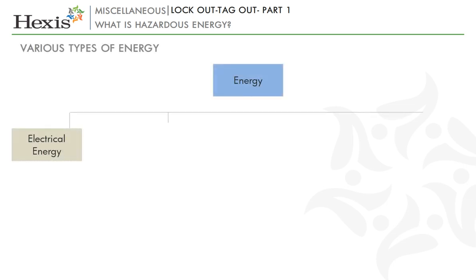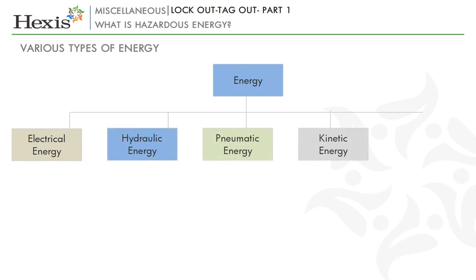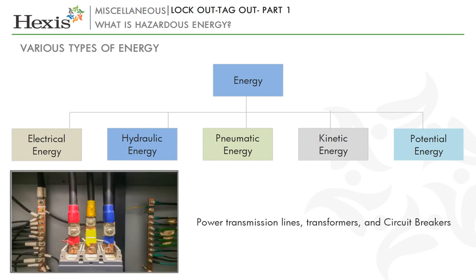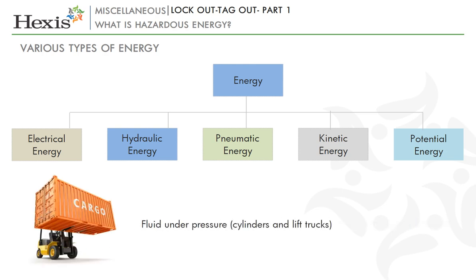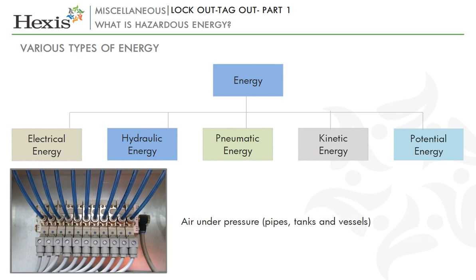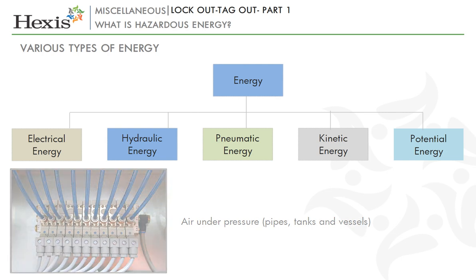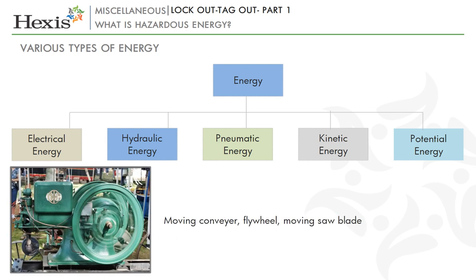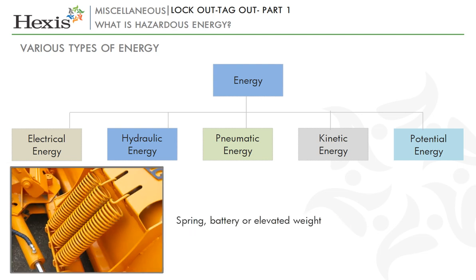The types of energy are: electrical energy, hydraulic energy, pneumatic energy, kinetic energy, and potential energy. Power transmission lines, transformers and circuit breakers carry electrical energy. Fluid under pressure, cylinders and lift trucks will have hydraulic energy. Air under pressure in pipes, tanks and vessels represents pneumatic energy. Moving conveyor, flywheel, and moving saw blade possess kinetic energy. Springs, batteries or elevated weights have potential energy.